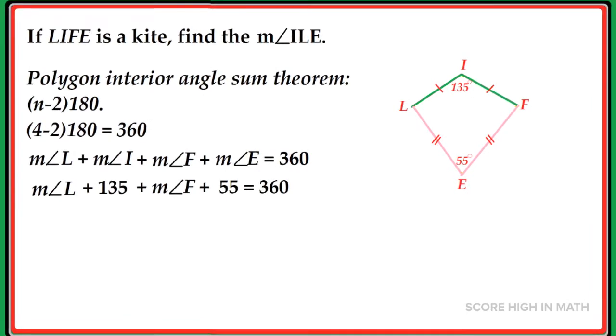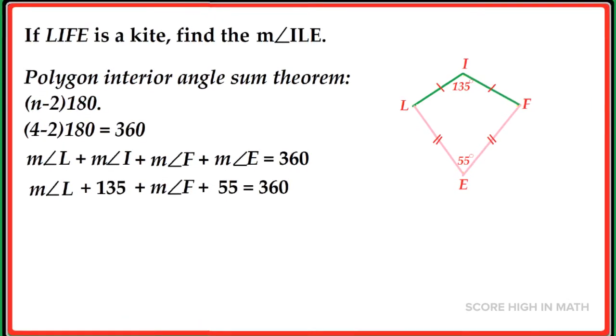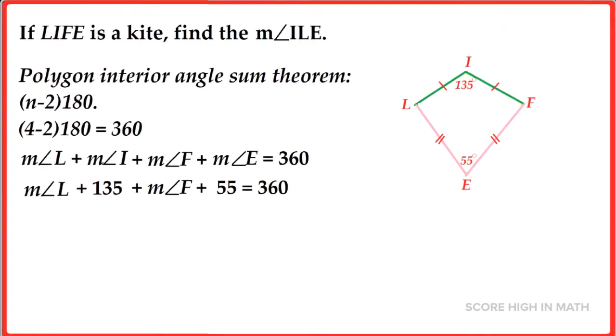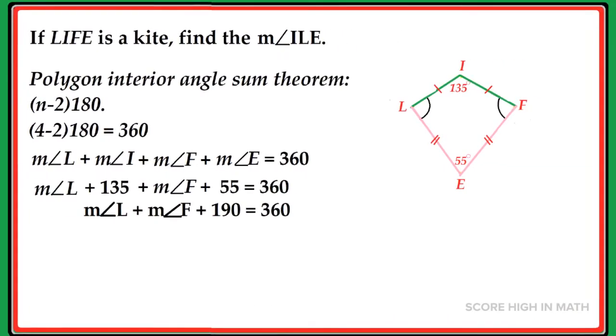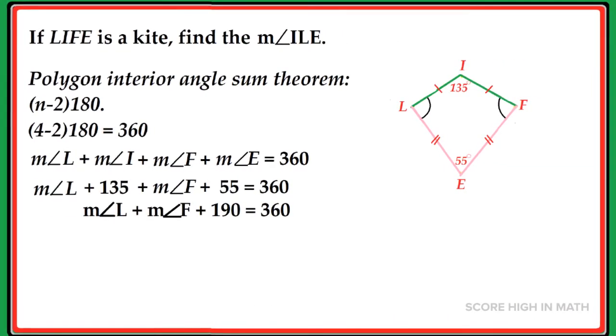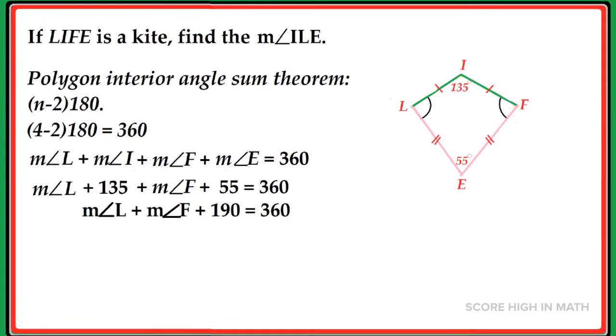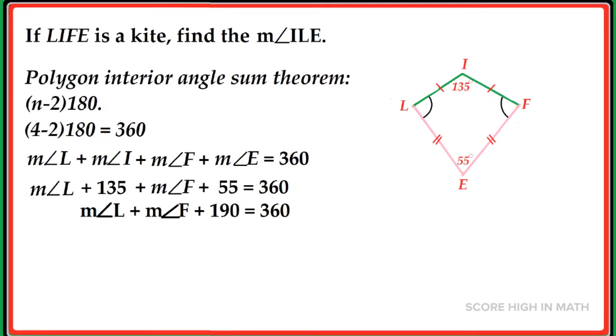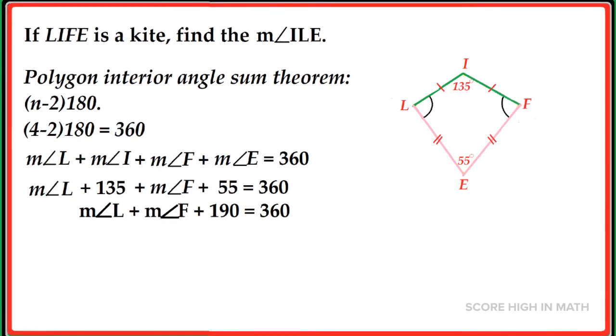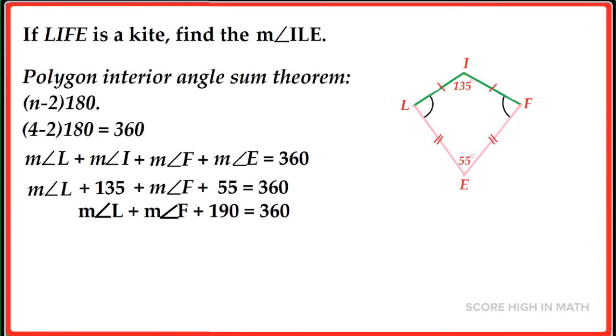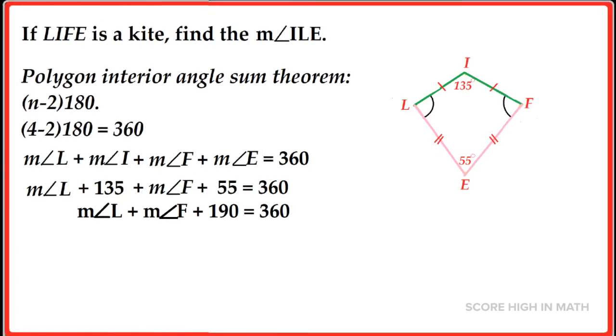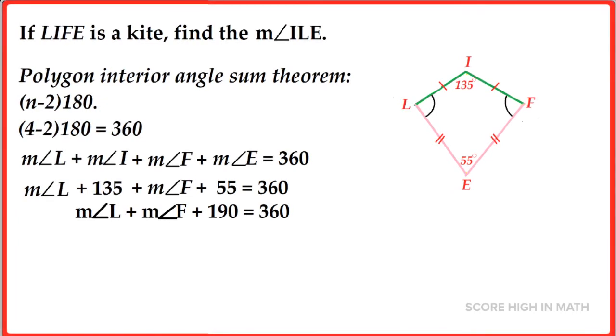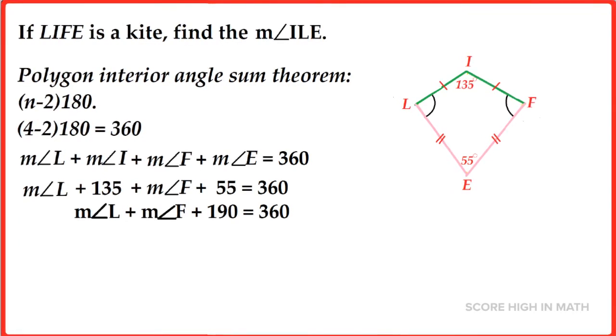Now we can add all the interior angles, which is equal to 360. Substituting the values in the given equation, it will give us the measure of angle L plus 135 plus 135 plus the measure of angle F plus 55 is equal to 360. But LIFE is a kite, so the two opposite angle measures are congruent. Therefore, the measure of angle L is also equal to the measure of angle F.